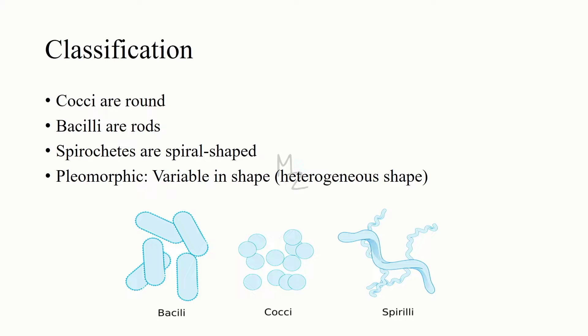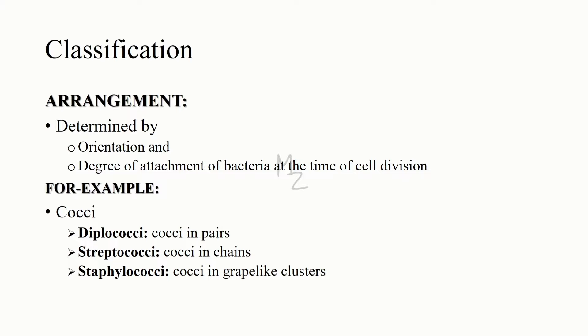Some bacteria are variable in shape and are said to be pleomorphic, heterogeneous shape. For example, consider a bacteria that has got the spiral shape, the cocci shape, and the bacilli shape, like it has round, rods, and spiral-shaped bacteria in it. So we will term that bacteria as pleomorphic-shaped bacteria. In addition to the characteristic shapes of bacteria, the arrangement is also very important.